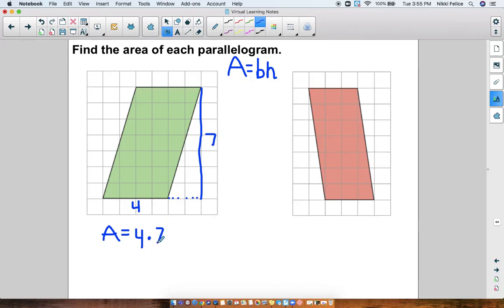So my area is 4 times 7. So my area is 28 units squared. And that's it. That's the area of the parallelogram.